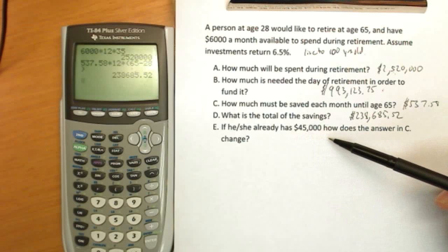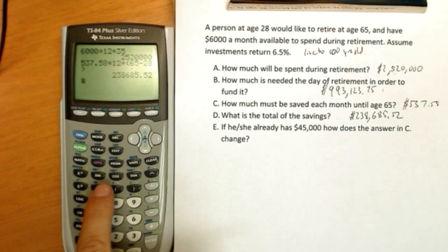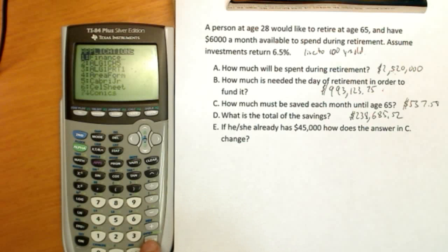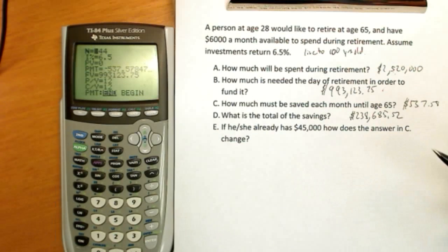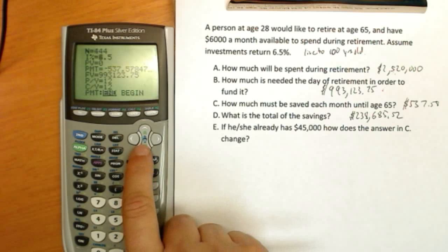If she or he already has $45,000, how will that change our answer? Now this is an important point. When I go back to finance, we've glossed over the positive and negatives. When you only have two amounts, it really doesn't matter. If you change one sign, it'll change the other. But here's how we can make a mistake here.